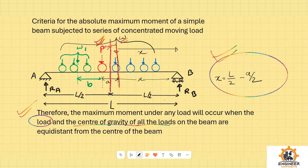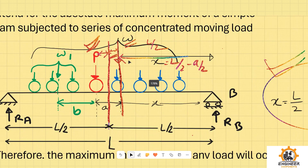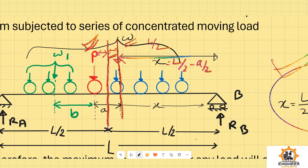So, x is equal to L/2 minus A/2. We are looking at the center of gravity distance — the center of gravity distance is L/2. So we look at how much distance has occurred between the load P and the center of gravity W.